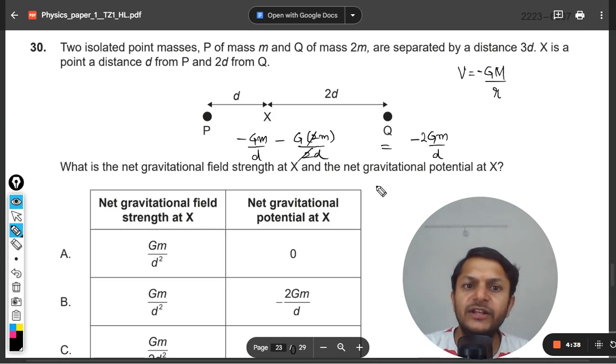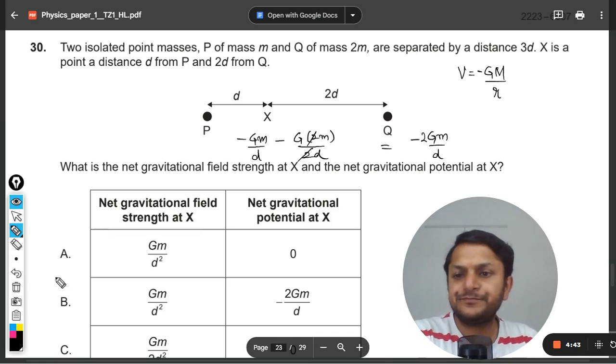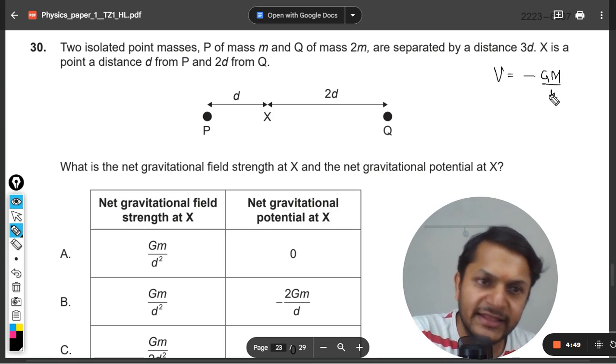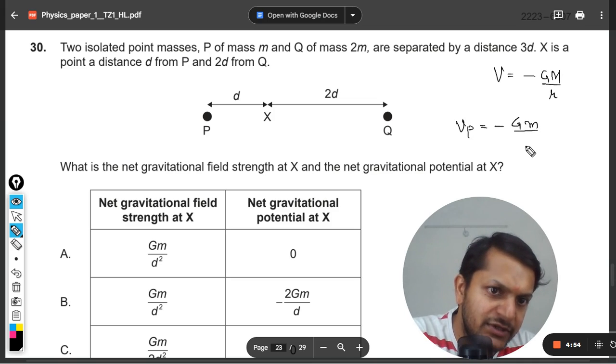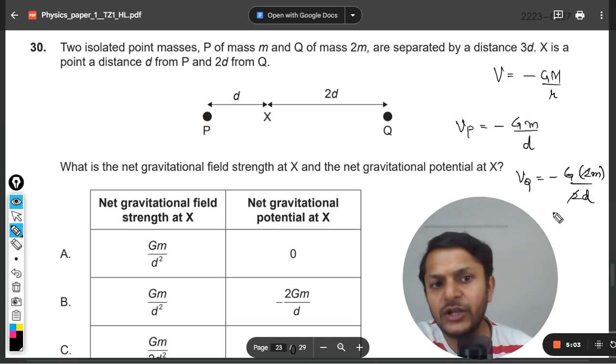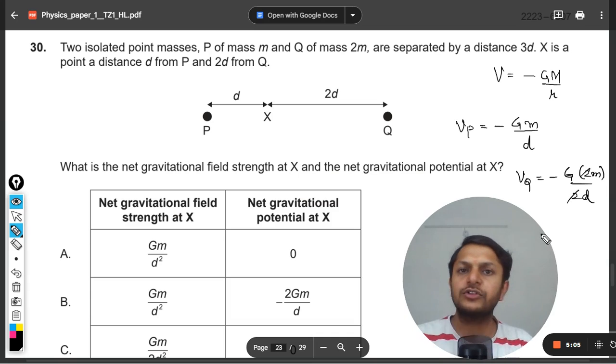So the answer will be 2Gm divided by d and that even negative. I repeat, first of all try to listen. The potential formula is always negative. So Vp will be given as negative Gm divided by d and Vq will be given as negative G 2m divided by 2d. 2 and 2 gets cancelled out. So technically both of the potential are negative and both of the potentials have the same magnitude. Obviously they will not be cancelling each other, they would be adding on each other.